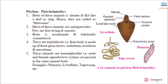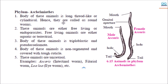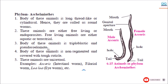The next phylum is Aschelminthes. The body of these animals is long, thread-like or cylindrical. Hence, they are called roundworms. These animals are either free-living or endoparasites. Free-living animals are either aquatic or terrestrial. The body of this animal is triploblastic and pseudocoelomate. The body is non-segmented and covered with a tough cuticle. These animals are unisexual. Examples: Ascaris (intestinal worm), filarial worm, Loa loa (eye worm), etc.